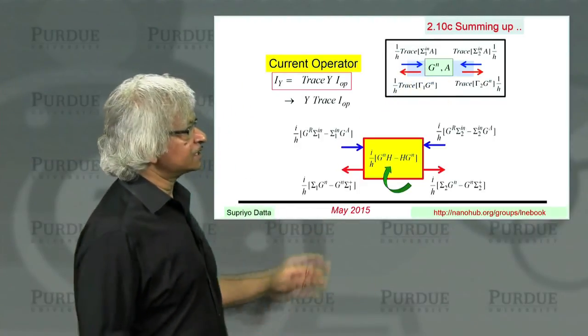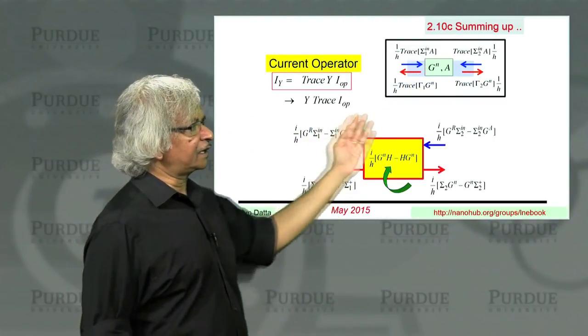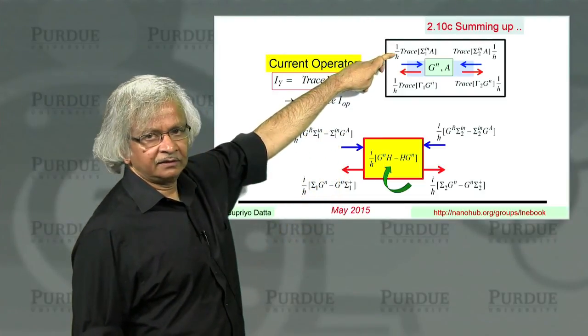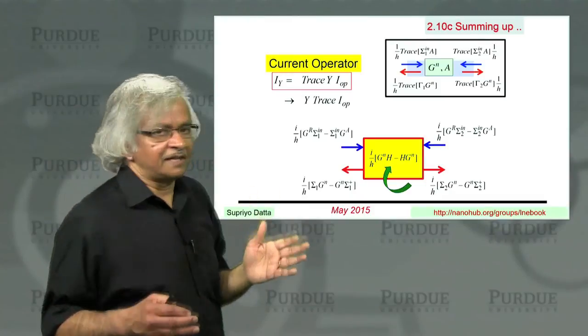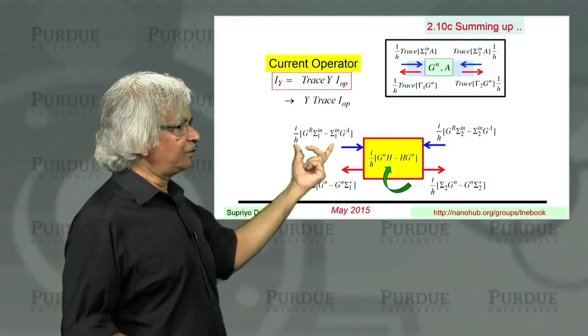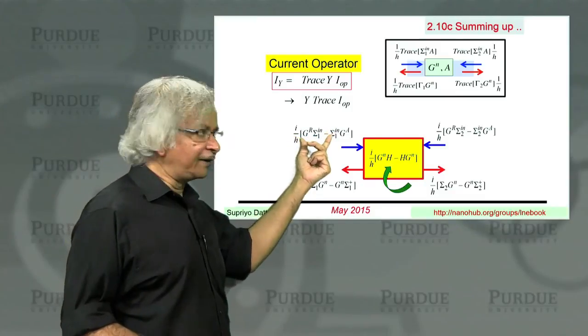What I showed was that in general, you could write a current operator such that this quantity, if you take its trace, you get that. But then, if you wanted the flow of some other quantity, some more complex quantity y, then you might want to work directly with these.